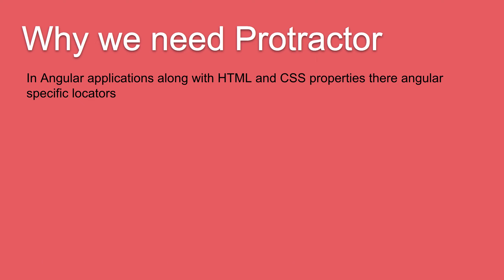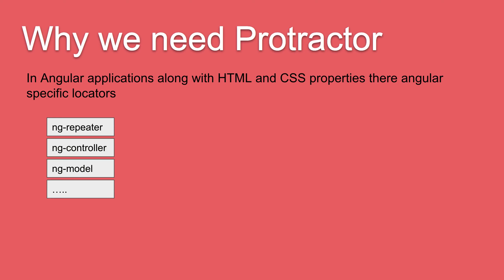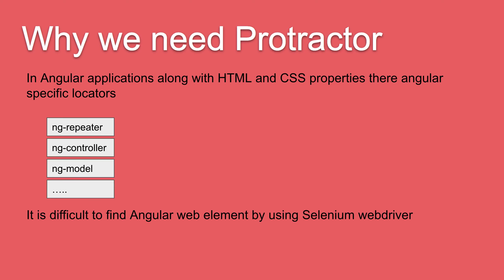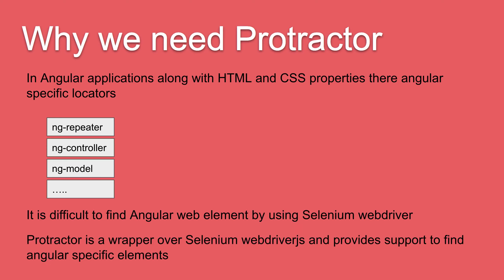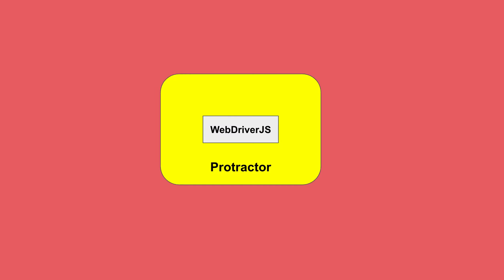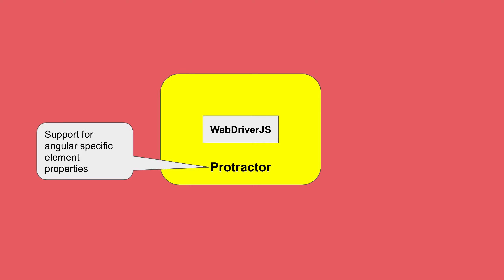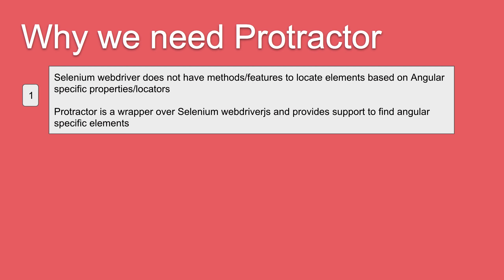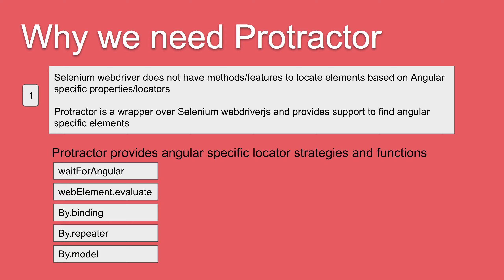Selenium and other conventional tools do not have the feature to find elements using these Angular-specific properties. In Angular applications, along with general HTML and CSS properties, there are Angular-specific locators like AngularRepeater, controller, model, and so on. It is difficult to find Angular elements using Selenium WebDriver, and therefore we need Protractor. Protractor is a wrapper over the JavaScript binding of Selenium — WebDriver.js — and it provides support for these Angular-specific elements. This is the first reason why we need Protractor.